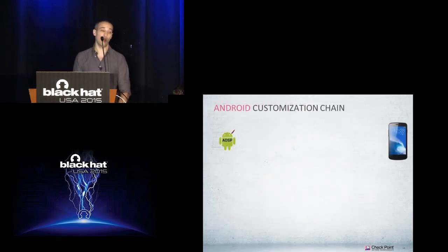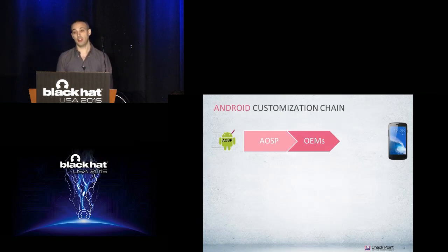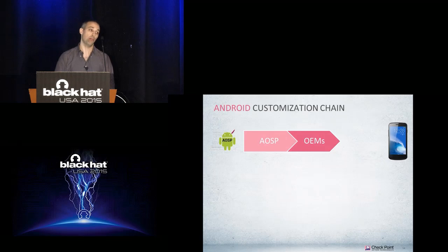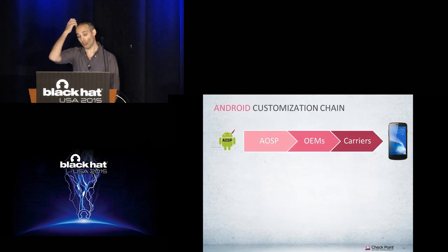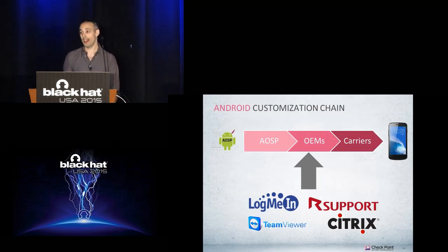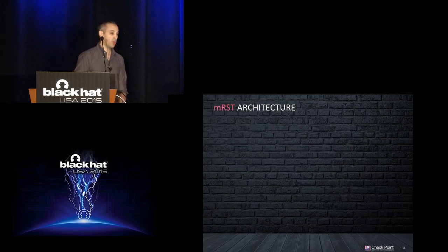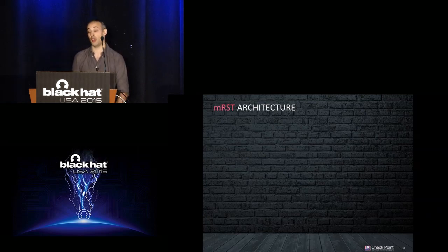How were MRST vendors able to obtain these permissions? Let's discuss the Android customization chain. Google created the Android open source project. It is then taken by different OEMs — for example LG, Samsung, and others — who compile their own version of Android with their own pre-installed apps. Carriers then take this version and create their own version as well. What the MRST vendors did was collaborate with different OEMs and carriers and convince them to sign their app with the OEM certificate, enabling them to get these elevated permissions.